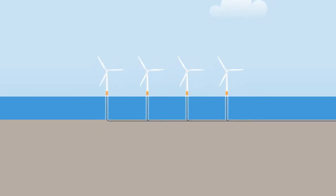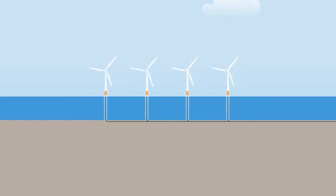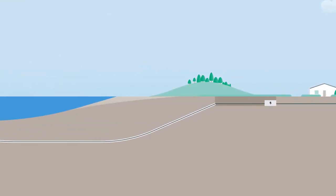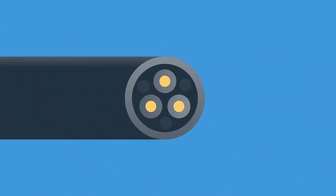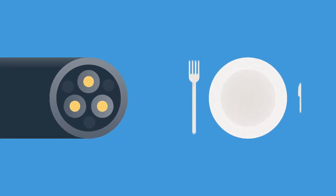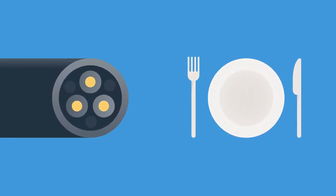Landfall or the sea to shore transition is where the cable carrying power from an offshore wind farm reaches the shore. The cable is less than 12 inches wide, roughly the same diameter as a dinner plate.